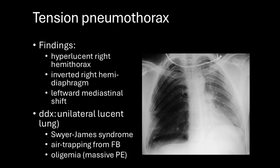In terms of differential diagnoses, we can consider conditions that lead to a unilateral lucent lung. Swire-James syndrome can cause a similar appearance due to air trapping, but it's usually more chronic in presentation. Foreign body air trapping could also cause a hyperlucent lung, but the clinical picture is different. Massive pulmonary embolism leading to oligemia might come to mind, but it wouldn't explain the absence of lung markings on this scale or the mediastinal shift.